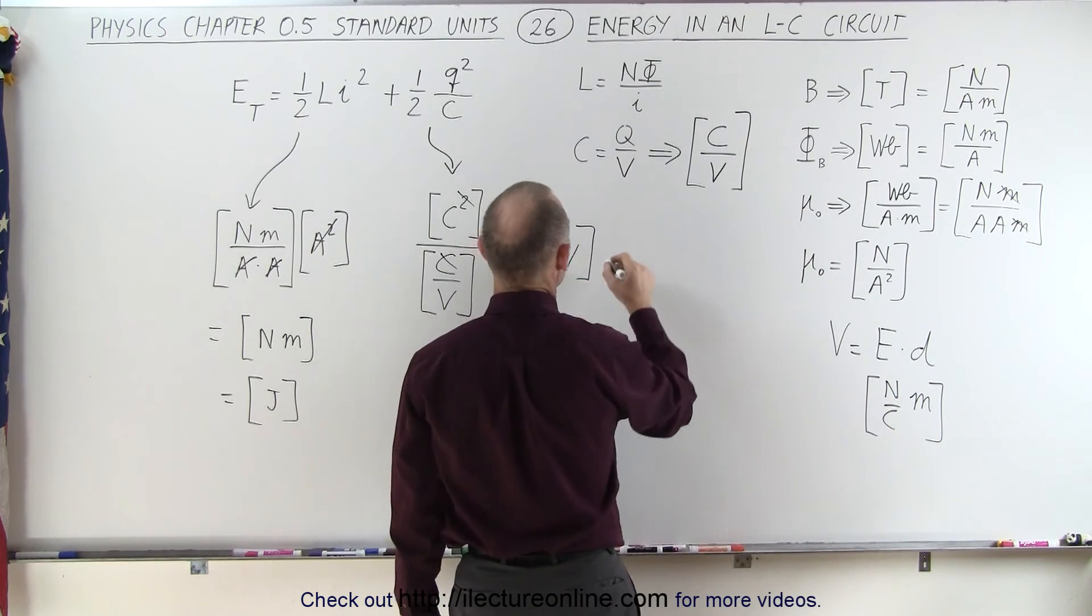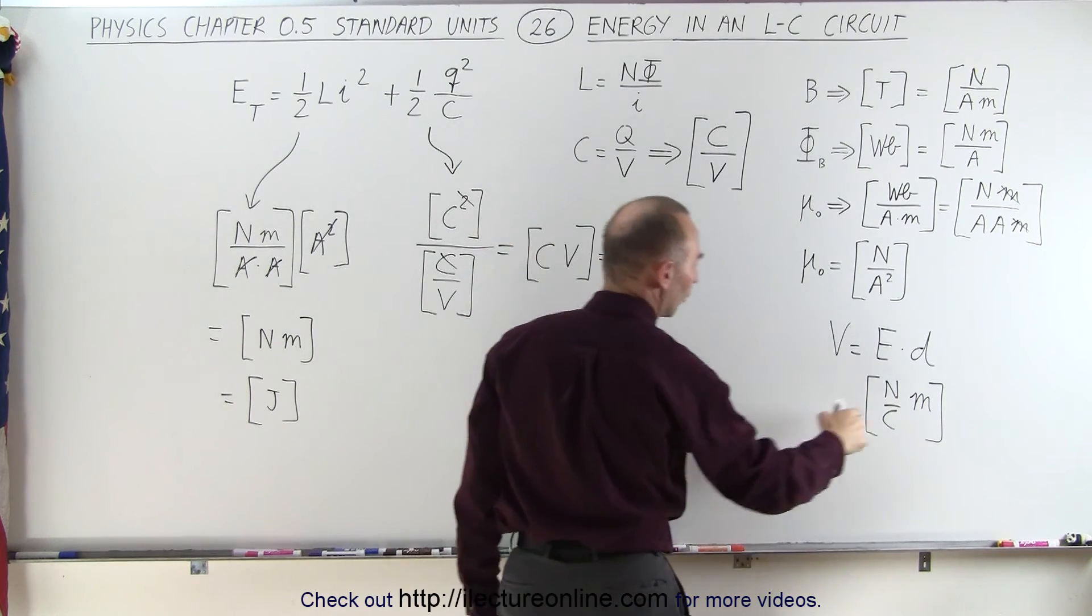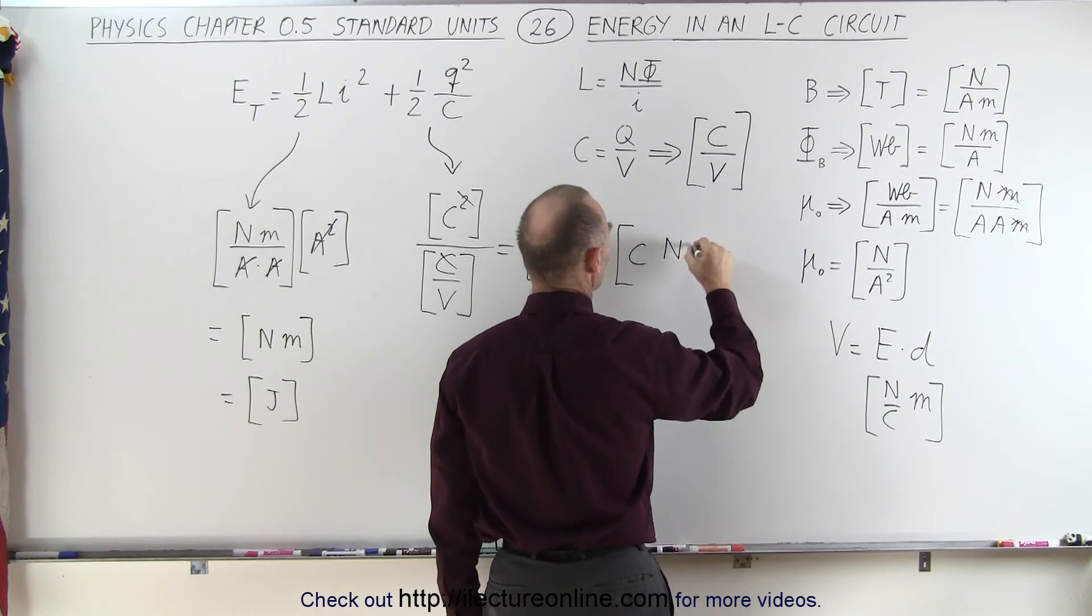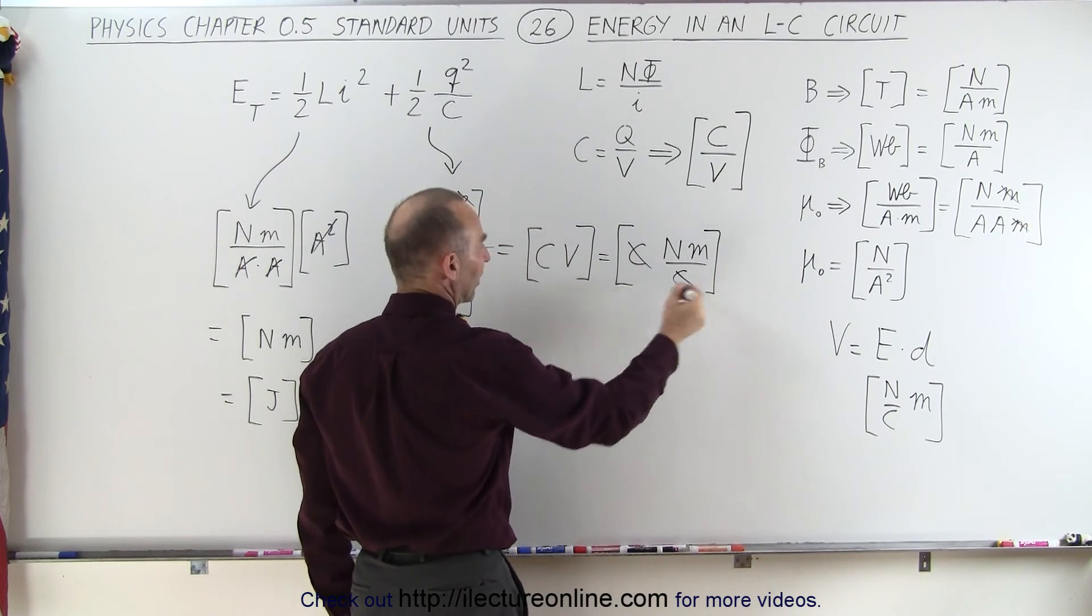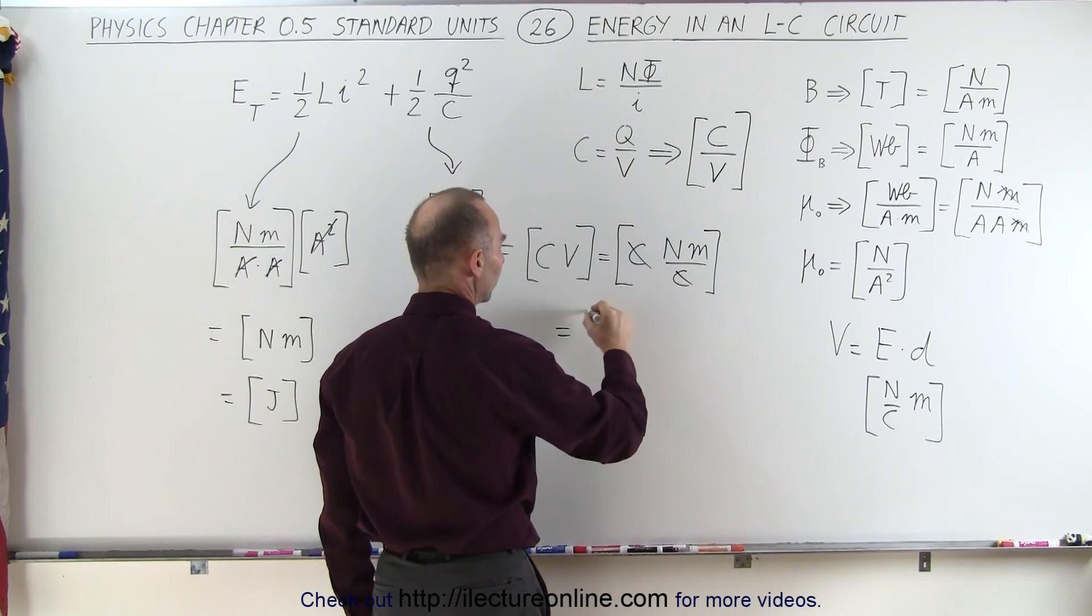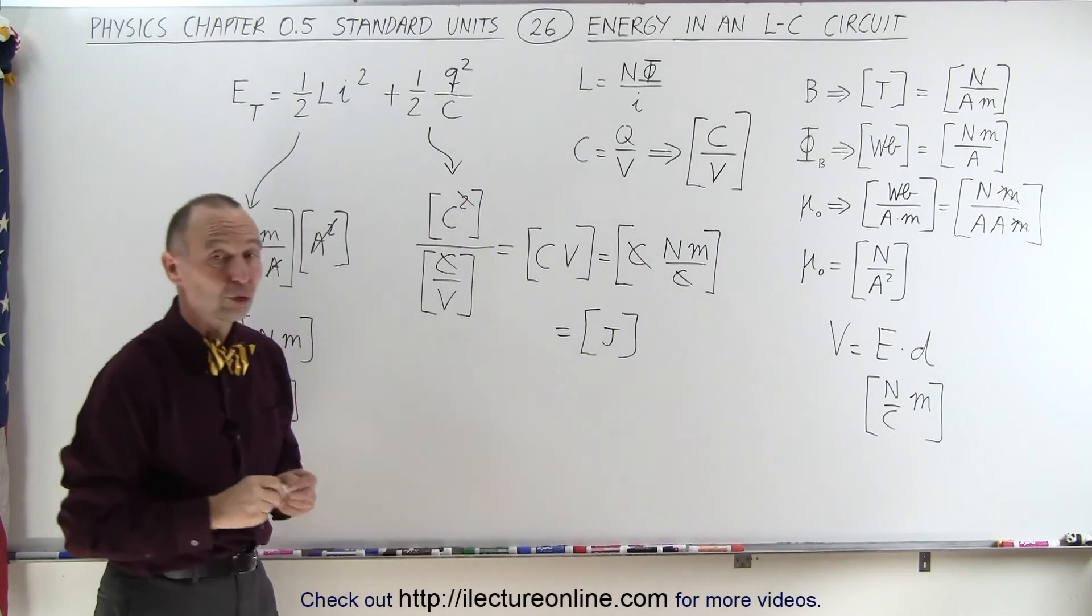So we can plug that in here. So this becomes coulombs times the units for voltage, which is newtons meters per coulomb. And then notice that the coulombs cancel out. You're left with newtons meters, which again is equal to units of energy, joules.